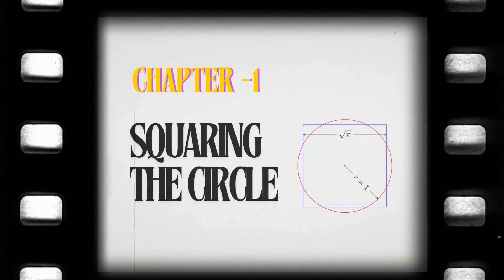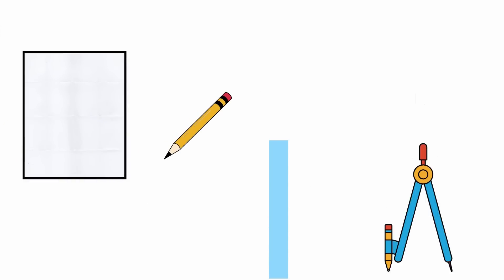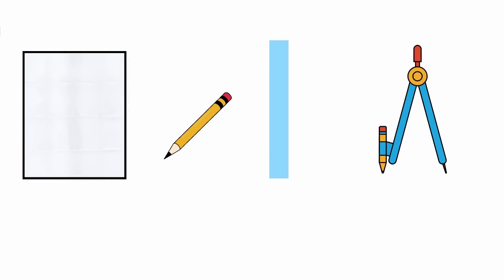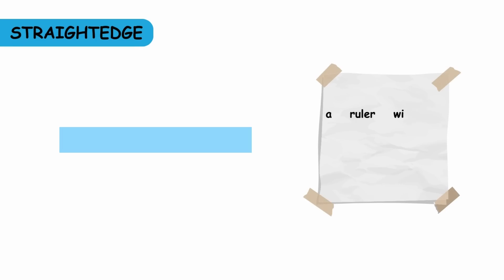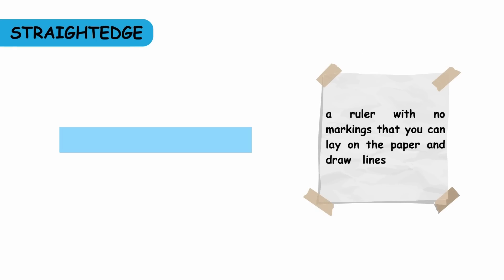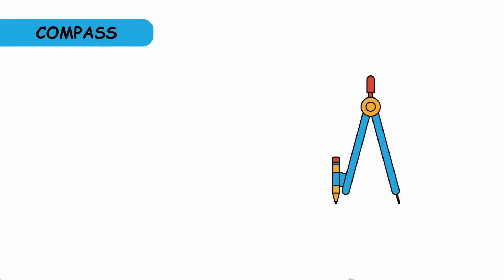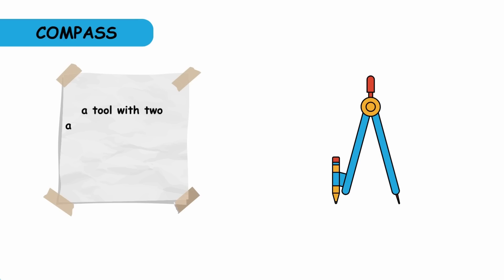Squaring the Circle. We begin with a sheet of paper, a pencil, and only two other tools. The first is a straightedge — a ruler with no markings that you can lay on the paper and draw lines and line segments against. The second is a compass, a tool with two adjustable arms that can be used to draw circles and circular arcs.